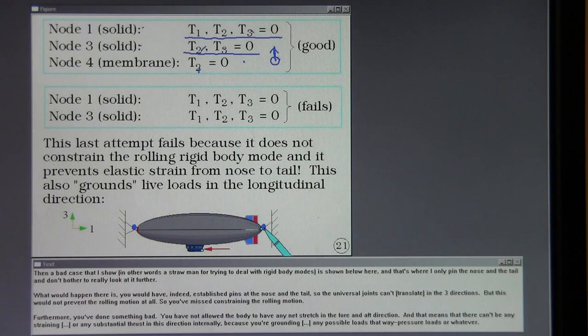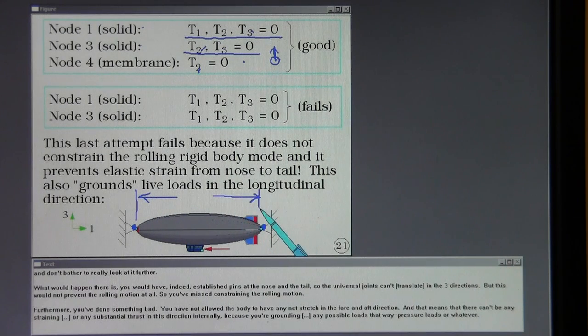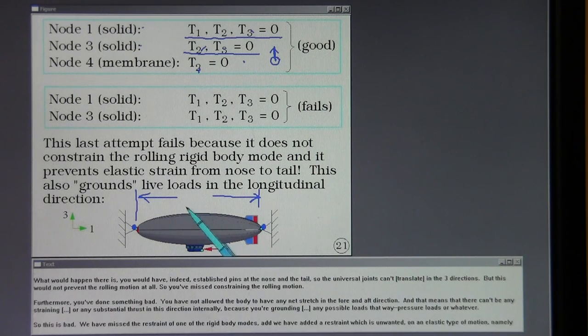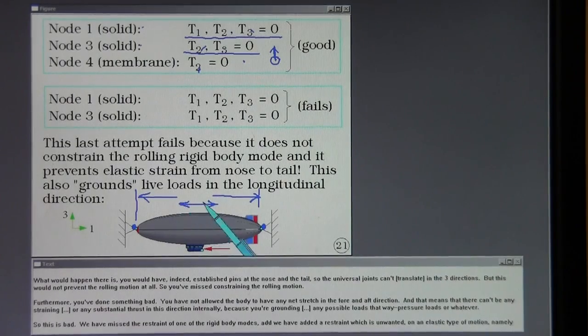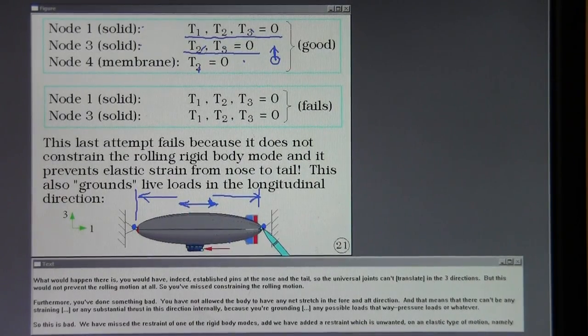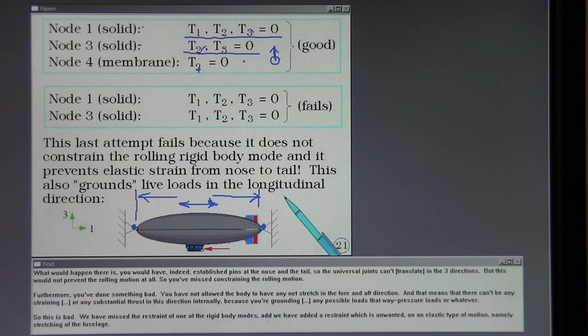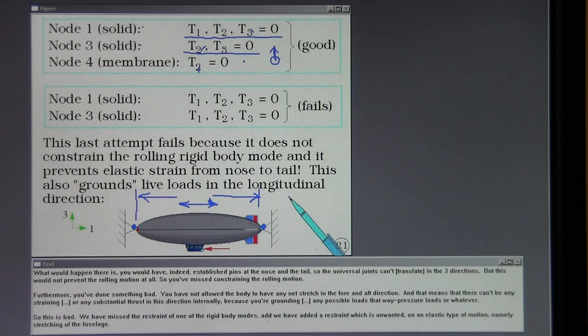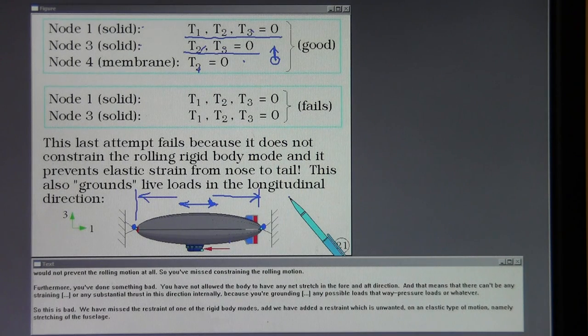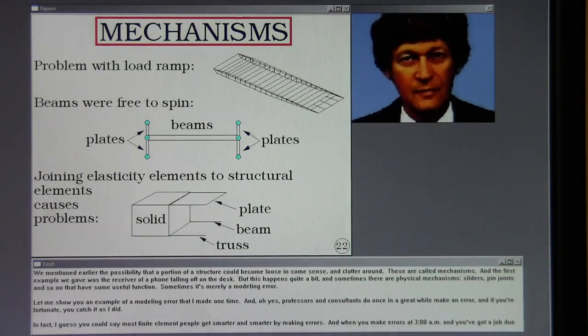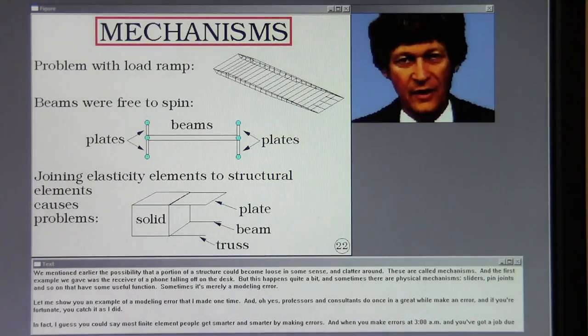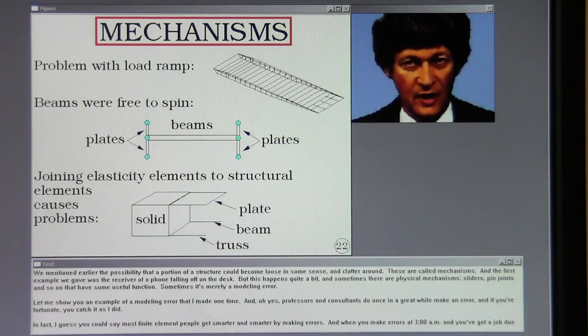Furthermore, you've done something bad. You have not allowed the body to have any net stretch in the fore and aft direction. And that means that there can't be any straining or any internal or any substantial thrust in this direction internally. Because you're grounding any possible loads that way. Pressure loads or whatever. So this is bad. We have missed the restraint of one of the rigid body modes. And we have added a restraint which is unwanted on an elastic type of motion, namely stretching of the fuselage.